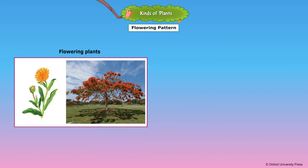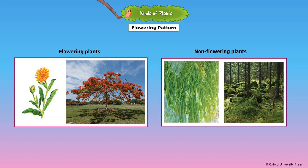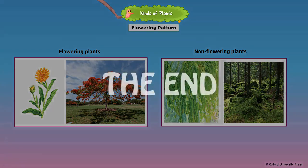Non-flowering plants: plants that do not produce flowers are called non-flowering plants. Examples of non-flowering plants are algae, moss, and fern.